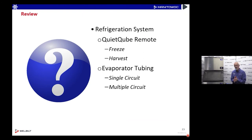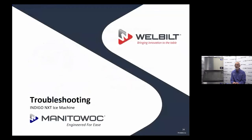That's how we utilize the refrigeration system in the freeze cycle and in the harvest cycle. It's a lot different than what we do with our sensible heat or hot gas defrost — here it's a latent heat defrost on these QuietCube ice machines. The freeze cycles will be very similar, but the harvest cycles are where things really change up. As a result, we troubleshoot the harvest cycles on these machines a lot differently than we do on our air, water, and remotes.